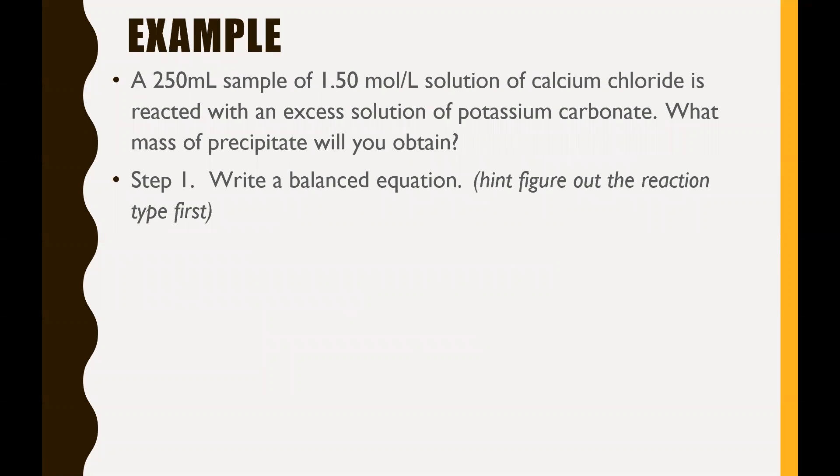First things first, we'll jump right into the example. A 250 mL sample of 1.50 mol/L solution of calcium chloride is reacted with an excess solution of potassium carbonate. What mass of precipitate will you obtain? There's a lot to piece out from this. First, we want to write a balanced equation and figure out what type of reaction we're dealing with.